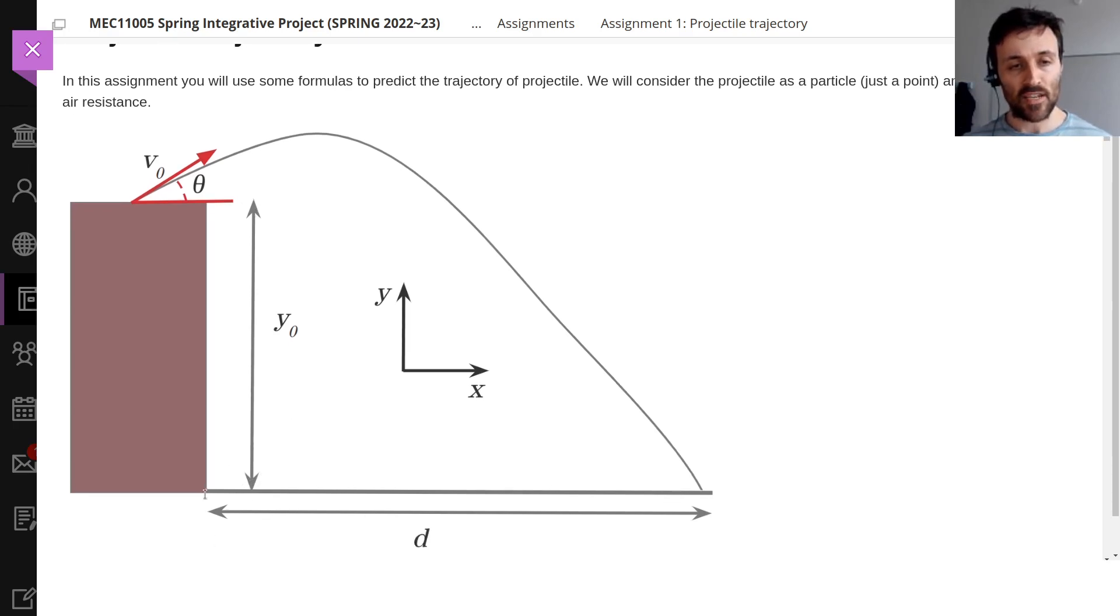And this projectile will travel a certain distance in the x, a certain horizontal distance called d, until it hits the floor. The floor is when y equals 0. We're going to use x and y to track the position of this trajectory. Different values of x and y will be different points of this trajectory.